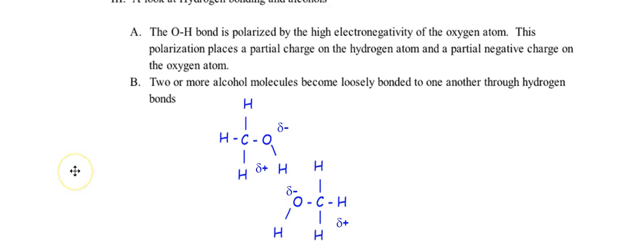So it says, let's look at the hydrogen bonding between these alcohol groups. So the OH bond is polarized by the high electronegativity oxygen atom. This polarization places a partial charge on the hydrogen atom and the partial negative on the oxygen.